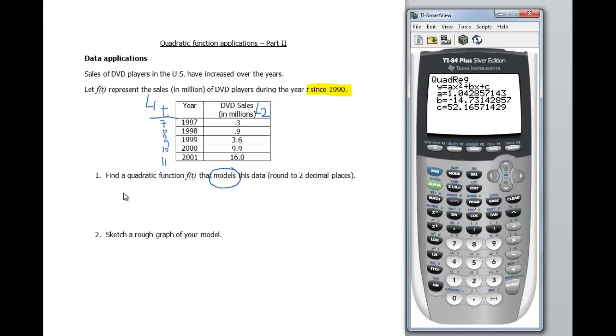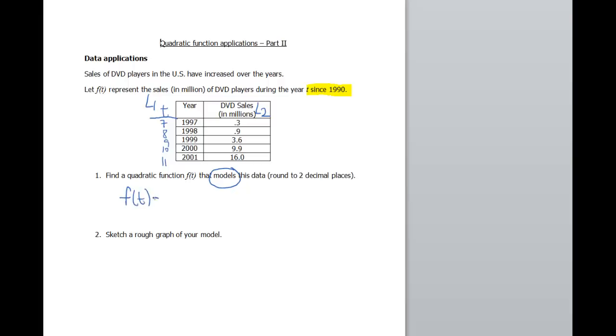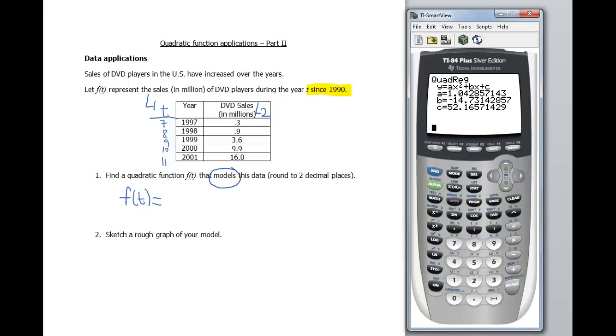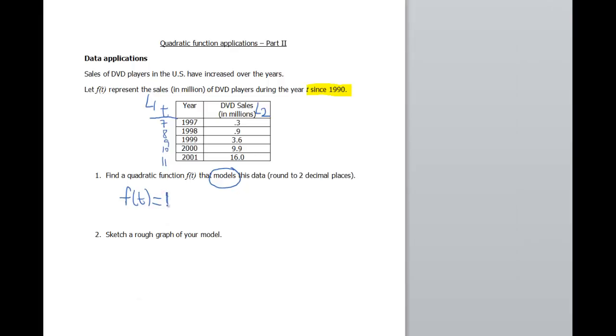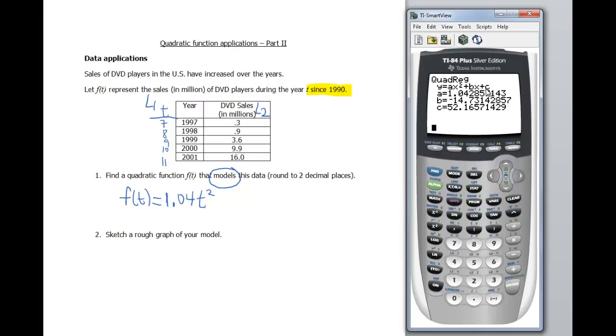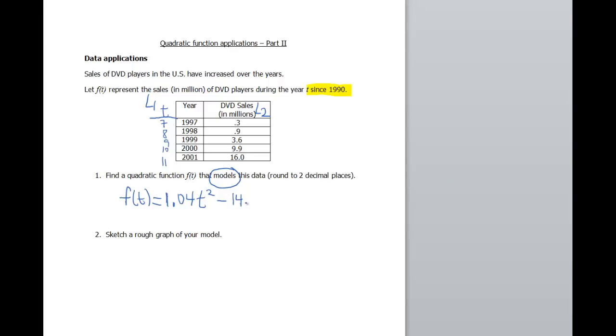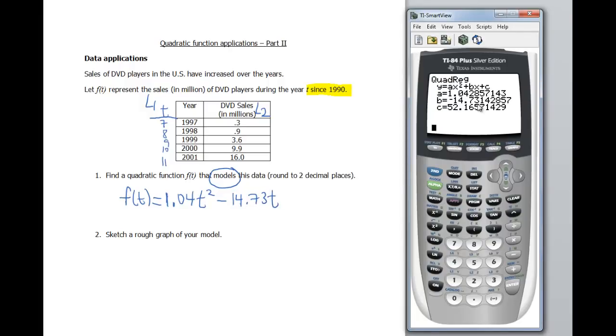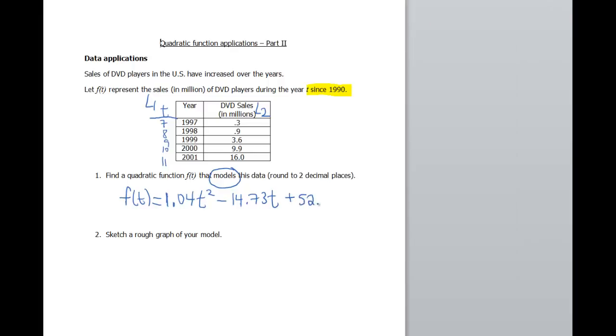Okay, so I'm going to have to toggle back and forth here. F of t is going to equal, so my a was 1.04. Now we have to use a t in here, so that would be t squared. And if you forget what this looks like, your calculator puts it up here at the top for you, so that's pretty handy. My b is going to be negative 14.73, so this will be minus 14.73t. Again, t, not x, because t's our variable, plus our c value, which is 52.17. So plus 52.17. Okay, fantastic.